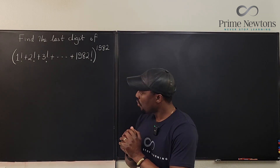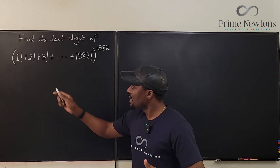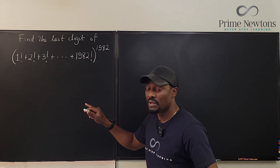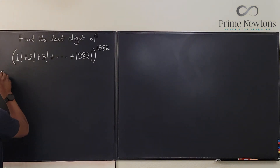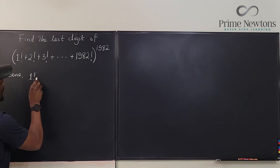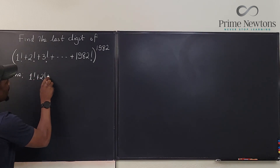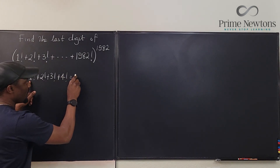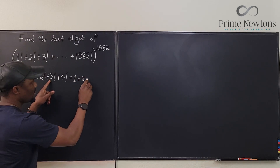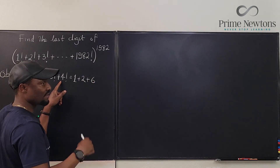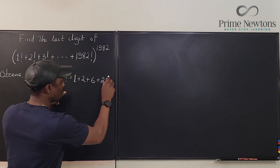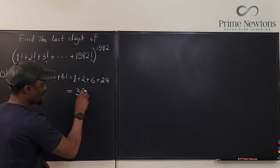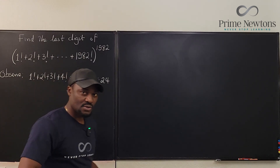Now, what do you observe? We can compute 1 factorial, 2 factorial, 3 factorial, up to as far as we can go. Let's do it: 1! + 2! + 3! + 4! equals 1 + 2 + 6 + 24. That gives us 3 + 6 = 9, and 9 + 24 = 33. So when we add up the first 4 factorials, we get 33.